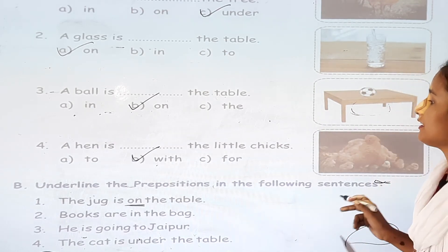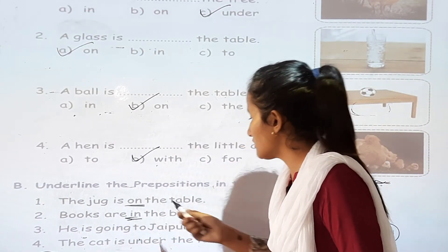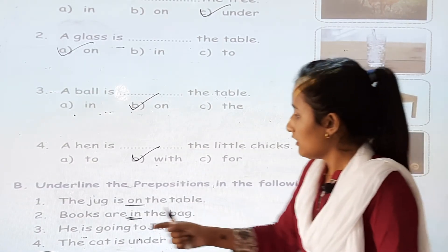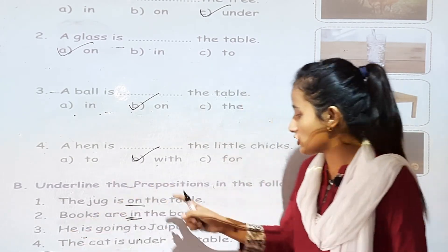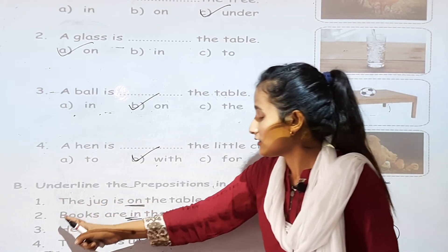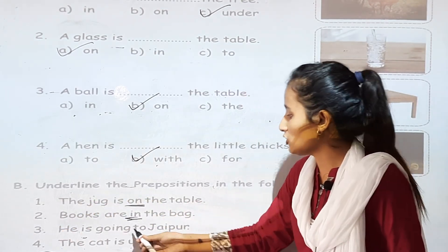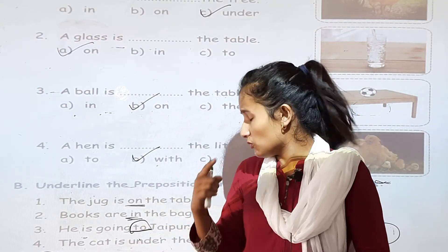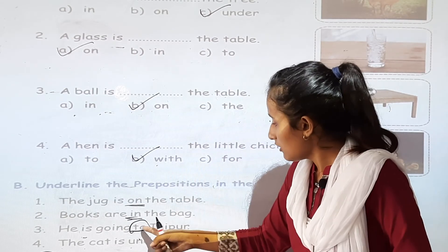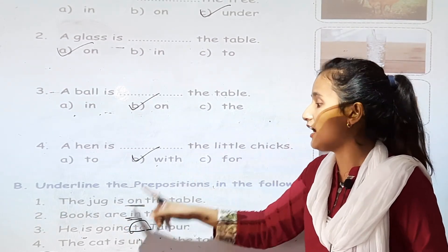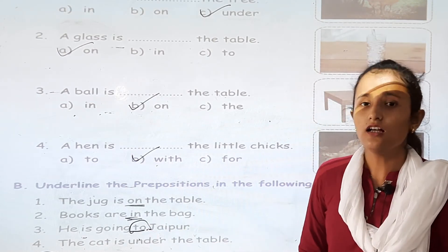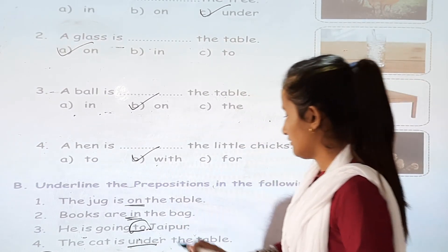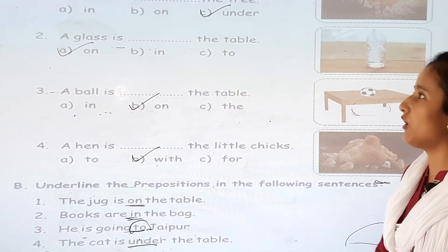Books are in the bag — 'in' is also a preposition word. He is going to Jaipur — 'he' is a pronoun and Jaipur is a noun, so 'to' shows the relation between the noun and pronoun; 'to' is a preposition word. The cat is under the table — 'under' is also a preposition word.